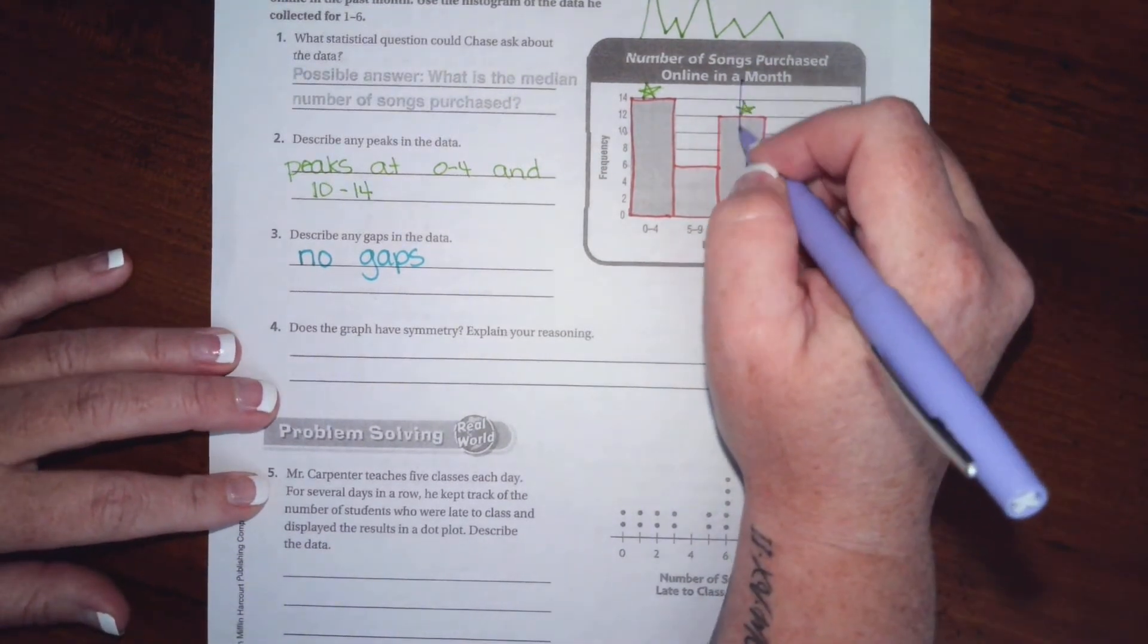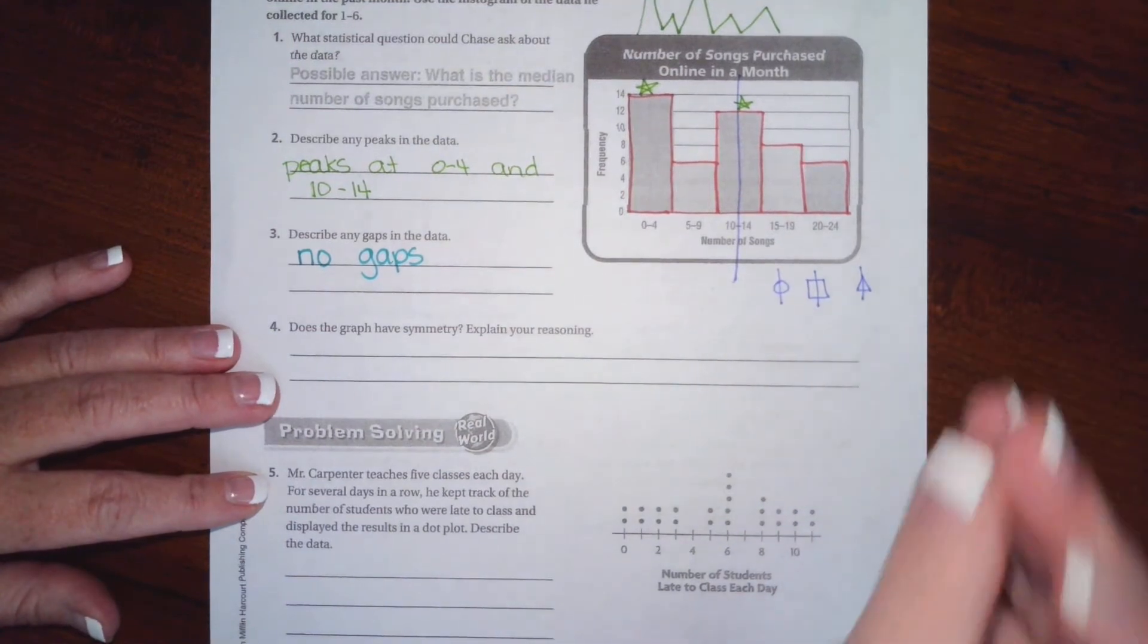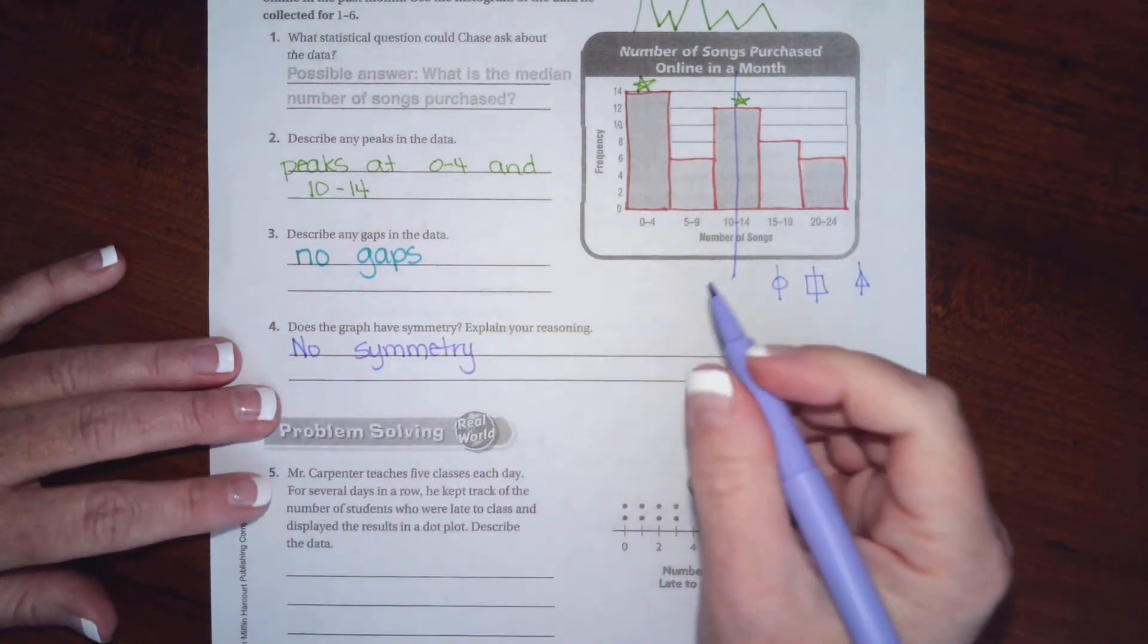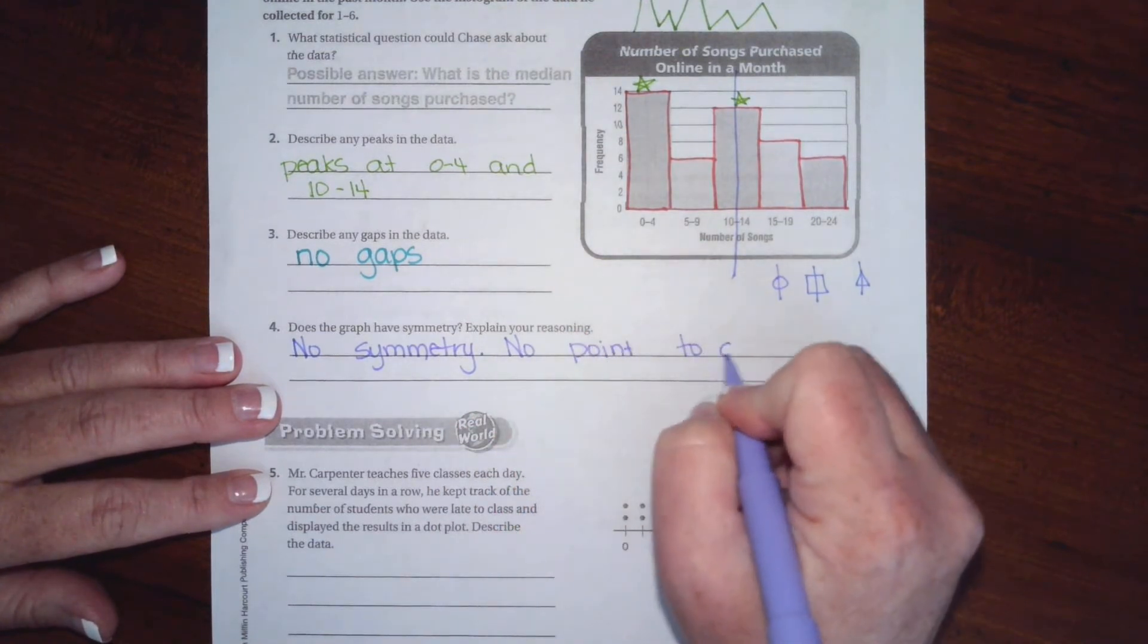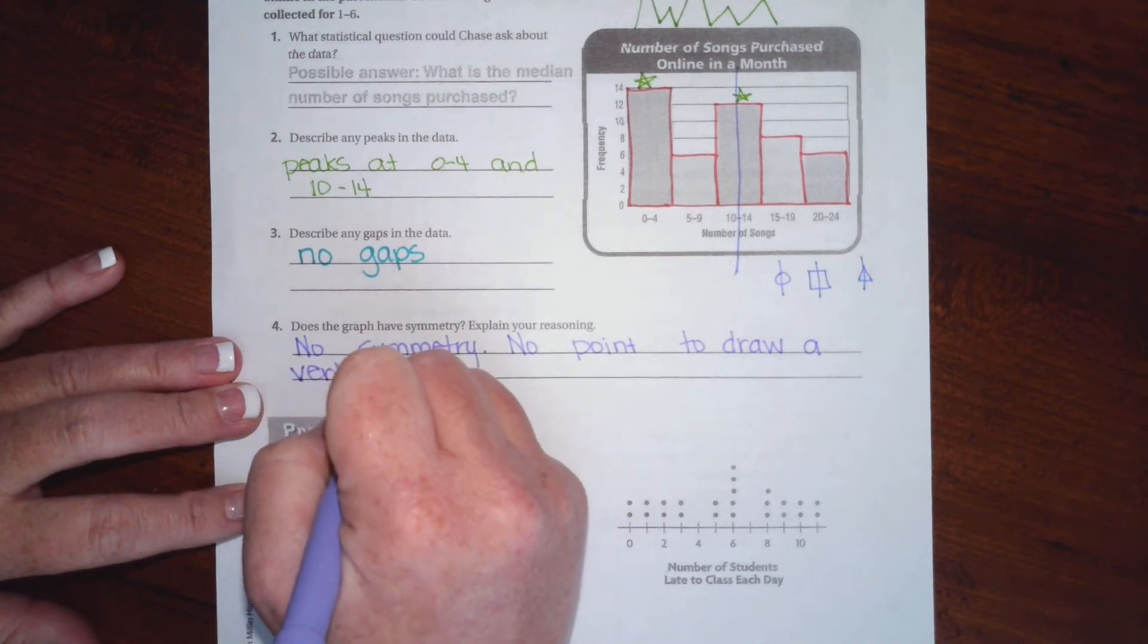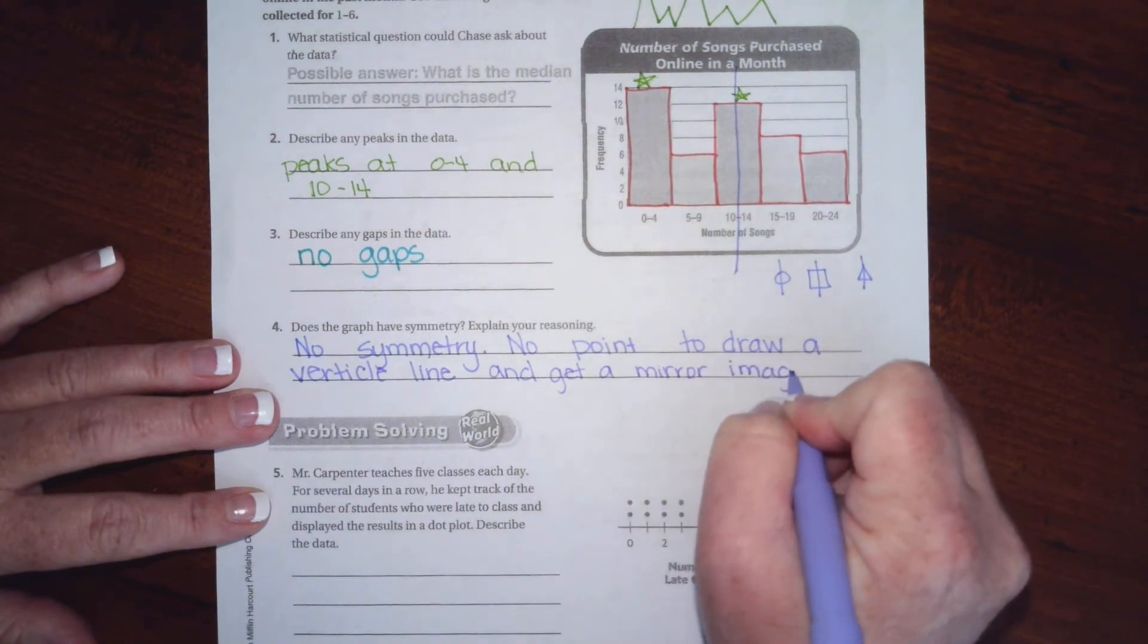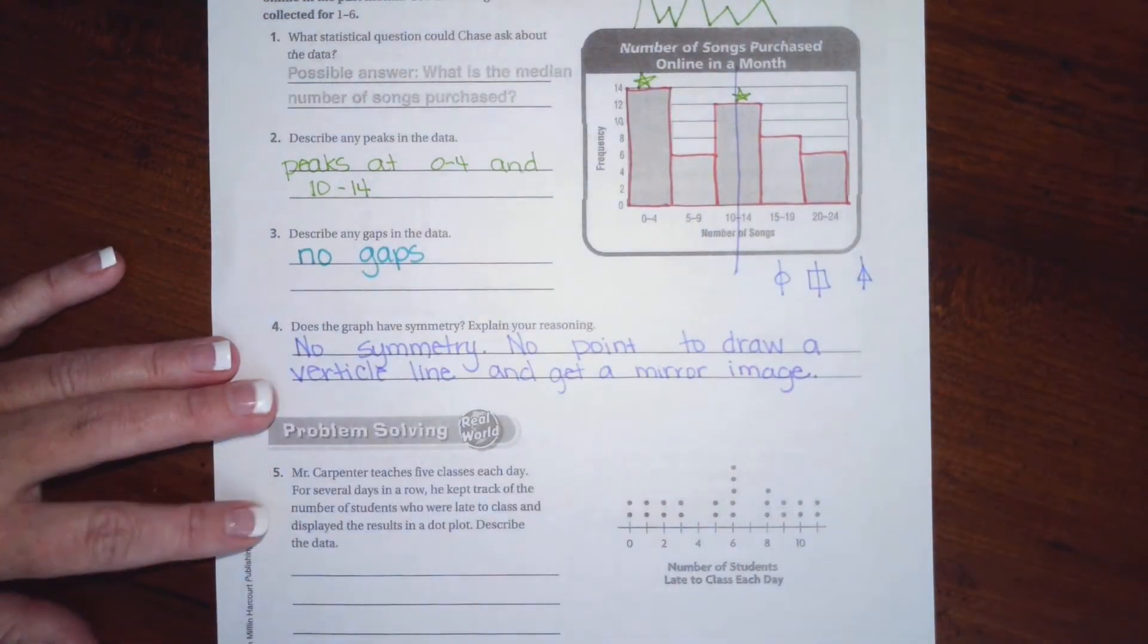However, when I fold this map in half, that's definitely not identical. This does not match up. There's no point in this data where it would fold in half and be symmetrical. So no symmetry. The reason there's no symmetry is because there is no point to draw a vertical line and get a mirror image.